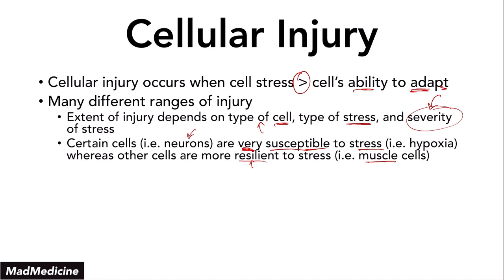Whereas a claudication in the leg lets our body kind of get adapted. Obviously, it's put under a lot of stress, but those muscle cells are able to handle that stress. And if you do a bypass in your leg in order to get more blood to that part, you can actually reverse or improve a lot of the damage and still have normal functionality. That just means that certain parts of our body are more resilient, and certain parts, like the neurons or our cardiac myocytes, are more susceptible to stress.